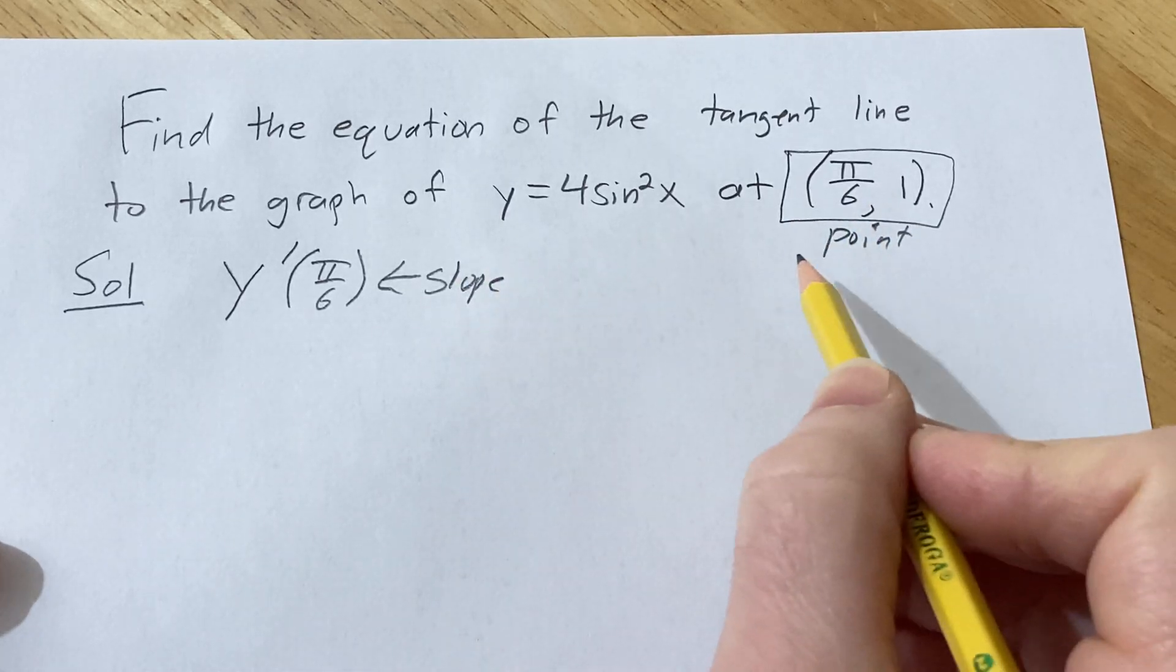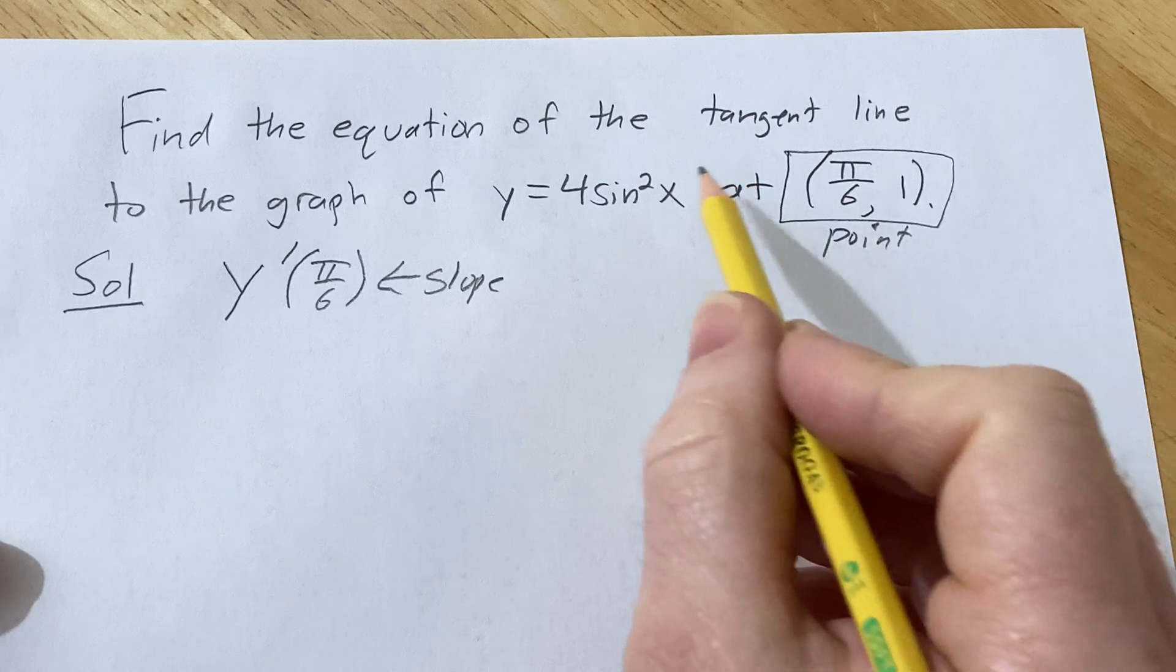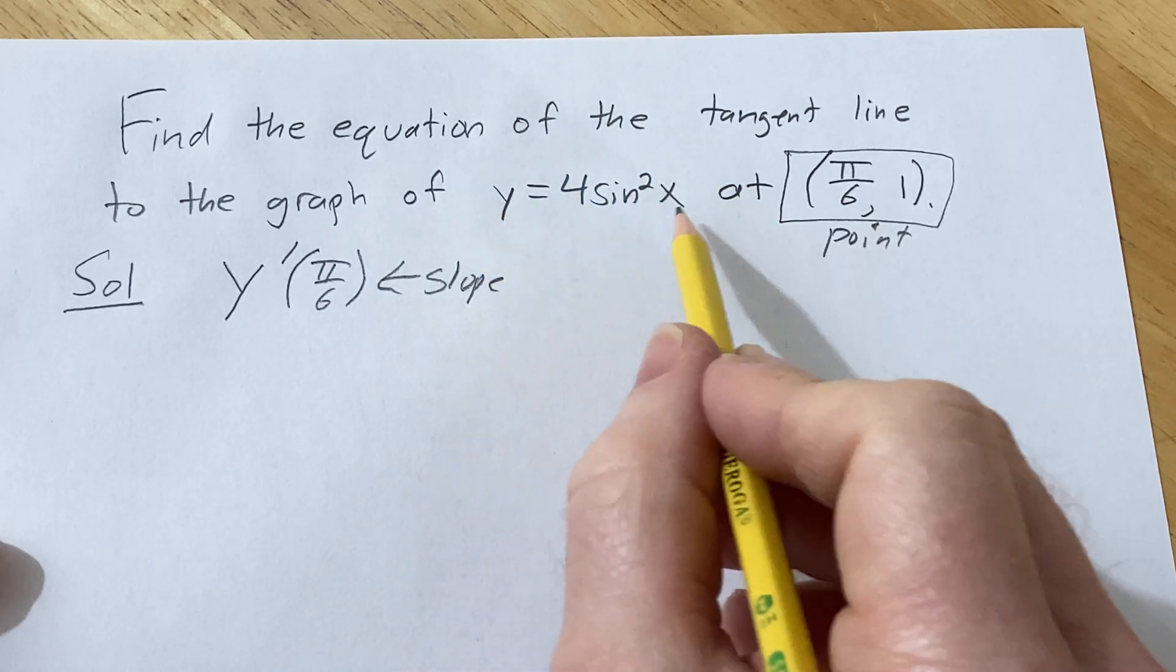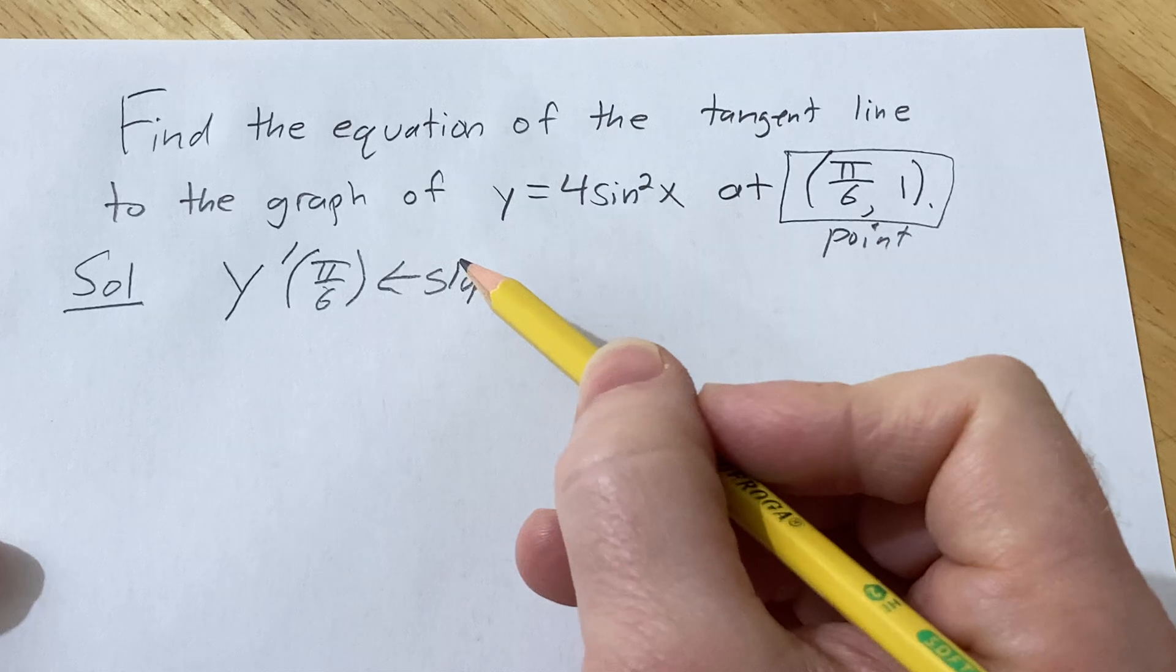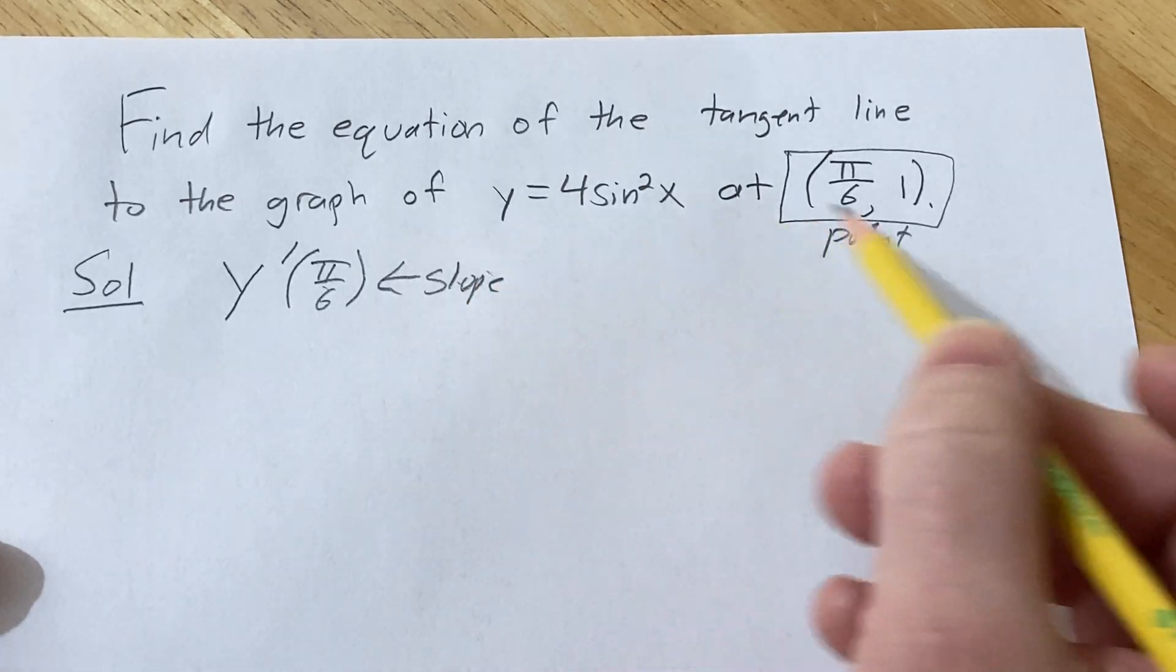Using the point and the slope, we can use the point-slope formula to find the line. All we have to do in this problem is take the derivative, plug in π/6, that gives us the slope, and then we use these two things to find the line.